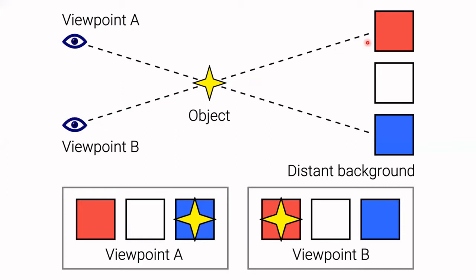Your brain perceives the object as being in front of the blue square first, and then your brain perceives the object as being in front of something else. Your brain accounts for the parallax somehow through depth perception. You could call this angle the parallax angle. This effect is actually used to make precise measurements of the distance to faraway objects like stars.